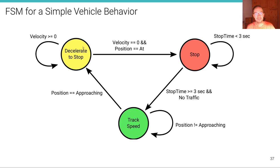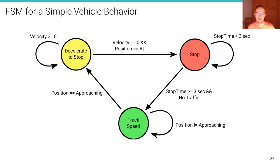We're decelerating, and as soon as the velocity equals zero and we have reached the target stop line location, we transition into the red stop state. We stay in that state for at least three seconds — if the stop time is less than three seconds, we stay and don't start moving again immediately. We only start to track speed again if we've remained in that state for at least three seconds and there is no further traffic, so we can safely move on.